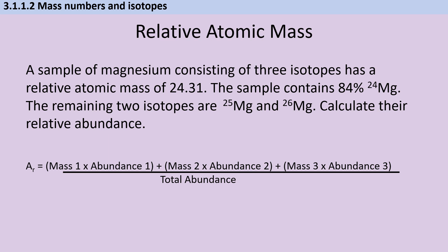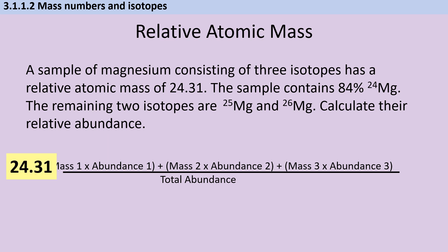So just like before, we have an expression for relative atomic mass, only this time it's got three isotopes in it instead of just two. So we know that 24.31, that's our relative atomic mass, is made up of 24 multiplied by 84, and then 25 multiplied by 16 take x, and 26 multiplied by x. And that whole lot is divided by 100.